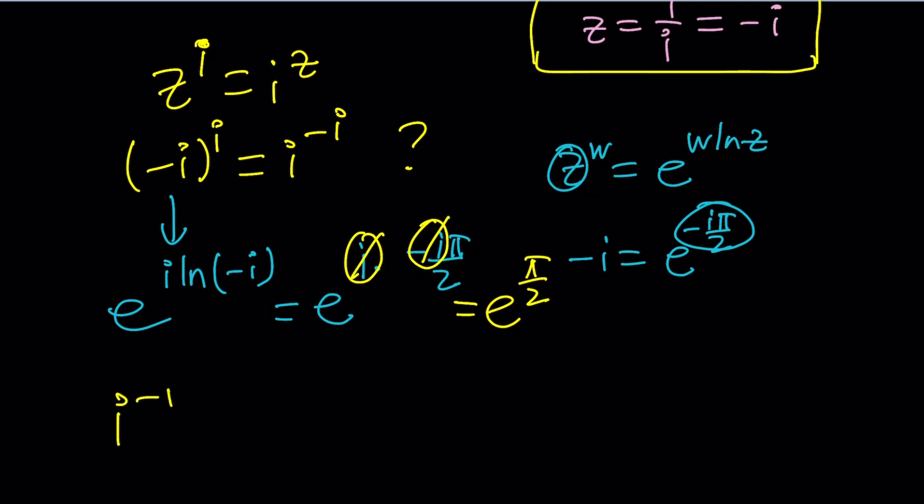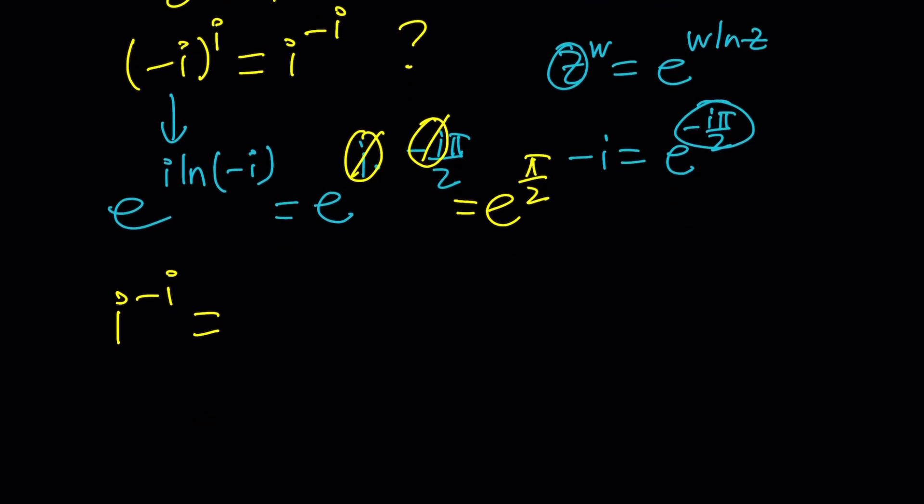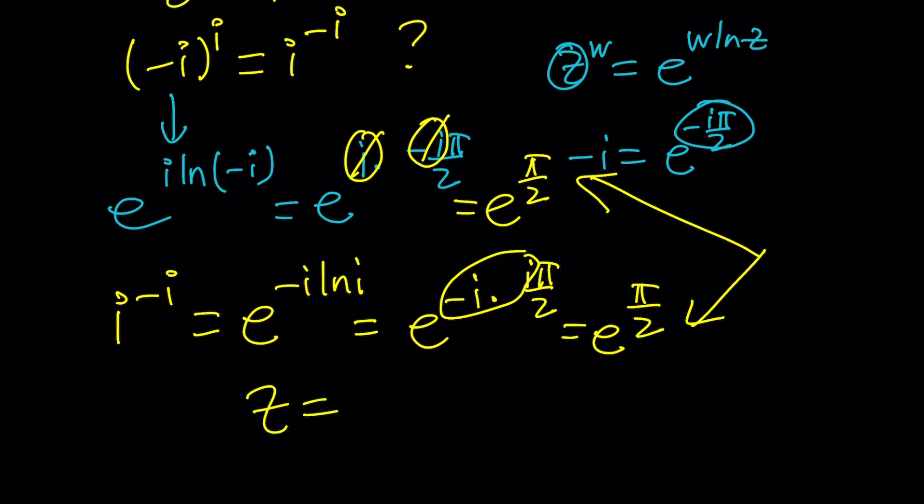What about I to the power negative I, though? Again, by using the formula, E to the power negative I ln I, something similar. And then, from here, we can basically replace ln I with I pi over 2 by using the same idea. And this will become E to the power negative I squared pi over 2. That will be E to the power pi over 2. So, for the principal values, at least, these two are equal. Therefore, Z equals negative I is a valid solution. Awesome.